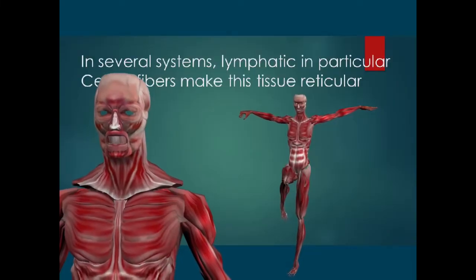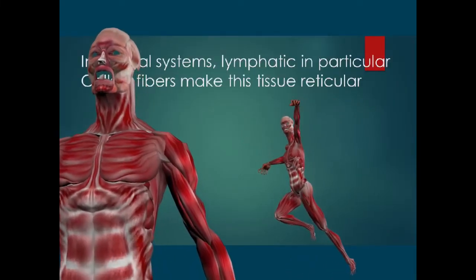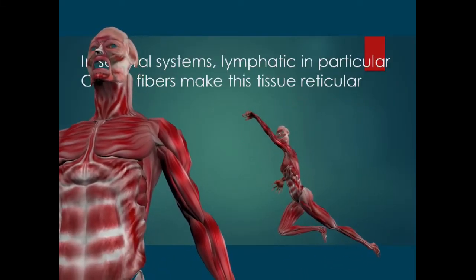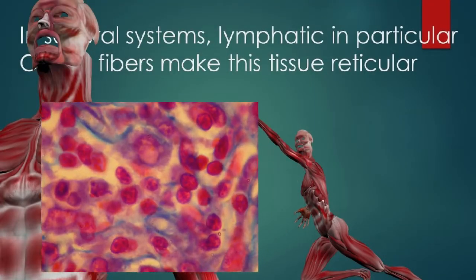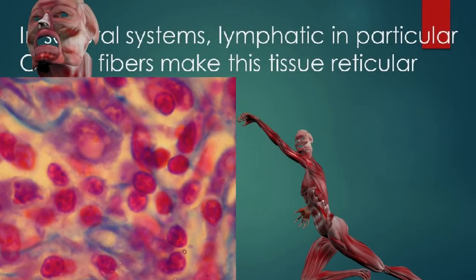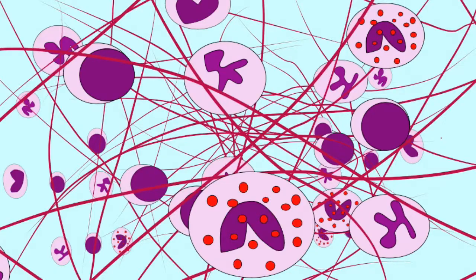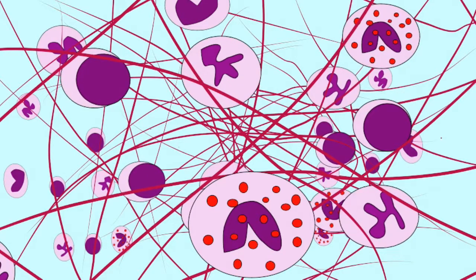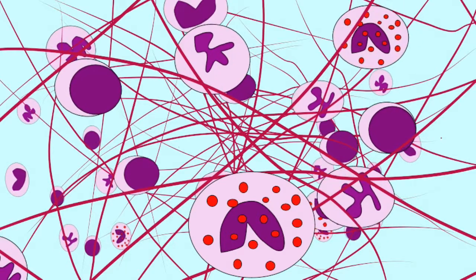In several systems, lymphatic in particular, cells and fibers make this tissue reticular. When I first met her I felt a connection — white blood cells here are good at fighting infection.